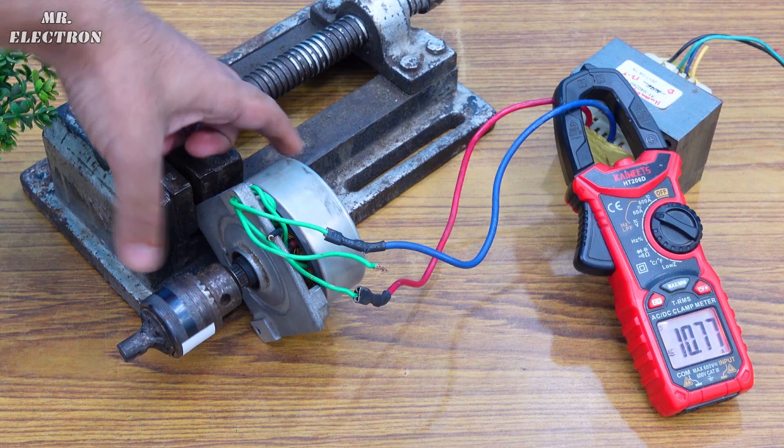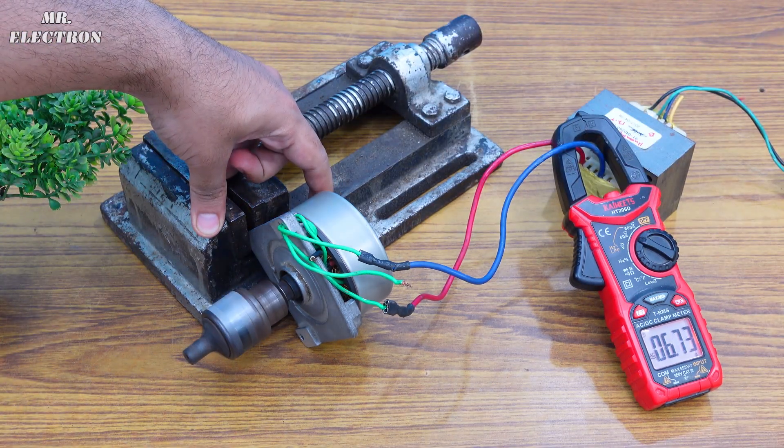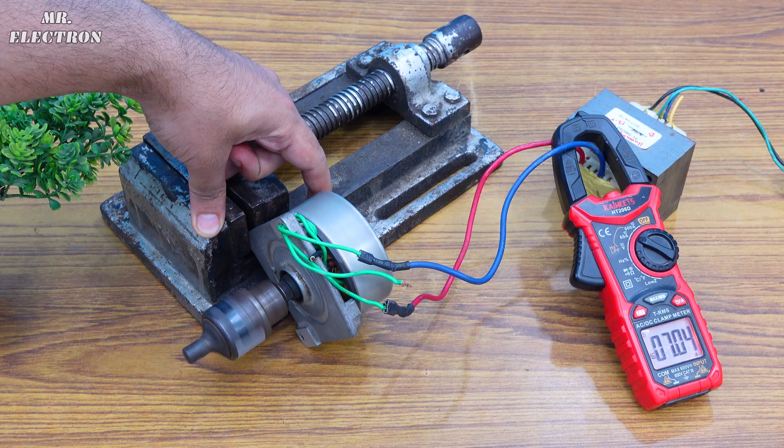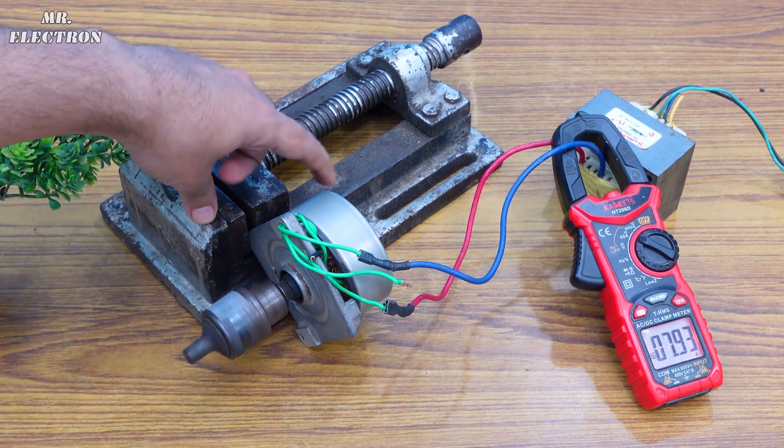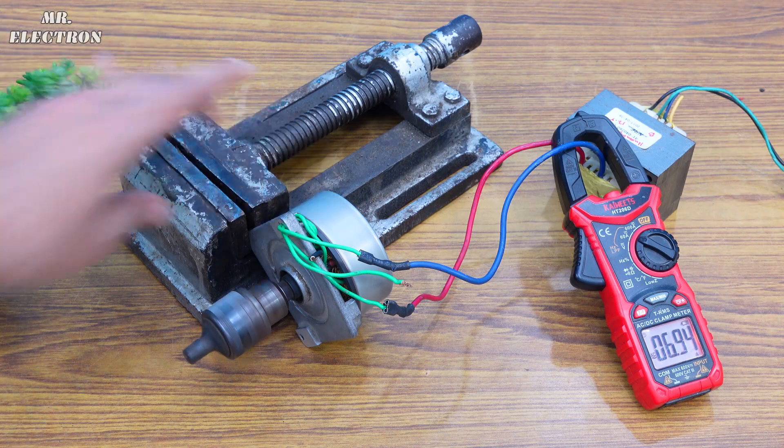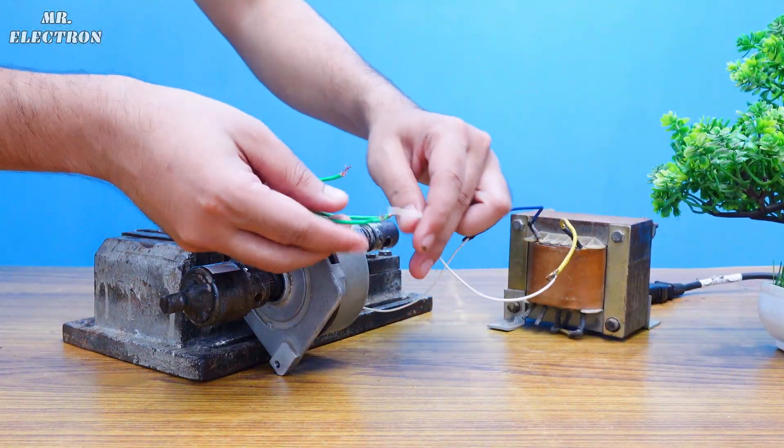You can see that the amperes are reducing, it's going as low as 6.5 amps, and after that it is losing synchronism. Let's turn it off. So here I have the 24 volts transformer, let's connect the wires.